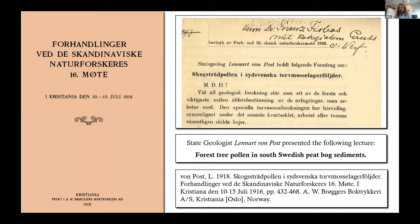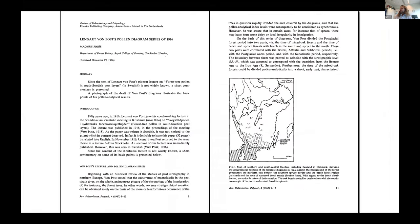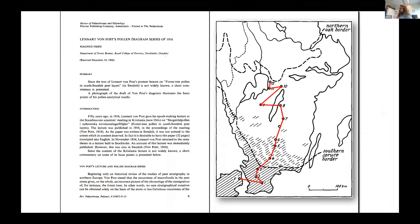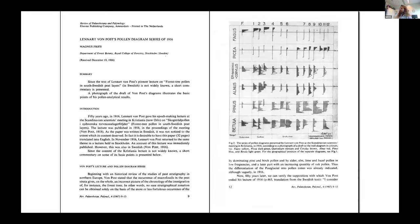As we all know, it started with Leonard von Post. Not only did he present the first pollen diagram, he presented a transect of pollen diagrams, although the pictures of these were not included in the publication of the presentation, which came out in 1918. The publication by Magnus Fries actually contains the map where we see the 13 sites from northern Denmark to central Sweden, which von Post put together.